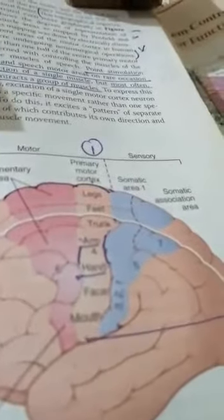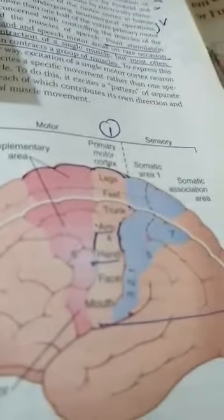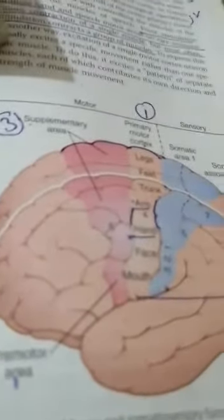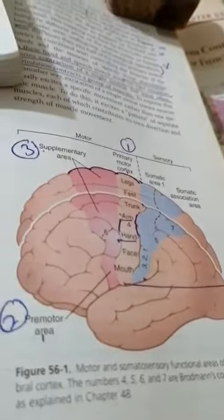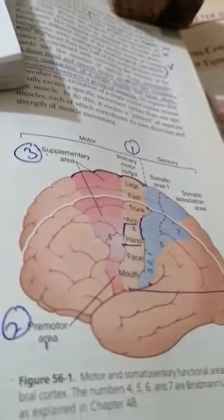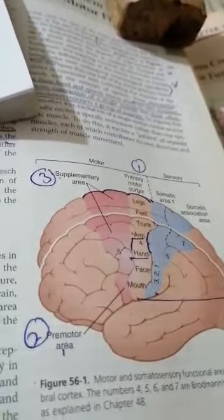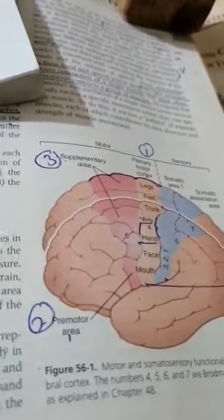Now we will discuss motor areas of the cerebral cortex. You can see the diagram — there are four motor areas: primary motor cortex, premotor cortex, supplementary areas, and special motor areas. These are concerned with control of motor functions of the body and initiate voluntary movements.